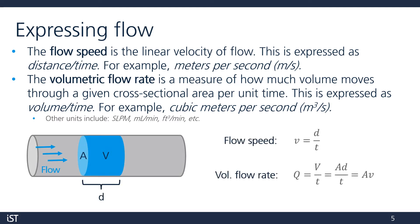How can we calculate the volumetric flow rate? We take our flow speed, which is distance over time, and multiply it by the cross-sectional area of our pipe or duct. In the example on the left, the area is simply pi times the radius squared.